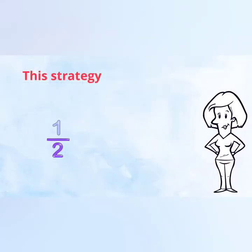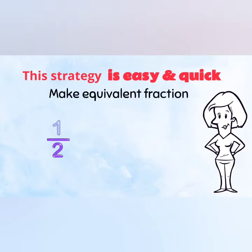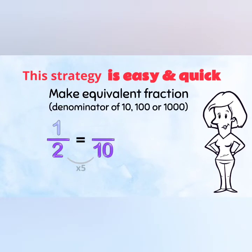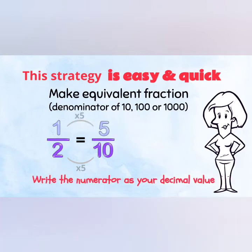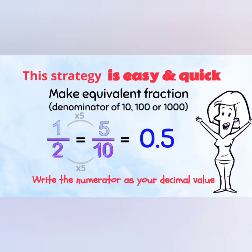This strategy is easy and quick! Make an equivalent fraction with a base-10 denominator. Keep it as low as you can, though. Finish your equivalent fraction, then just write the numerator as your decimal value. Super easy!